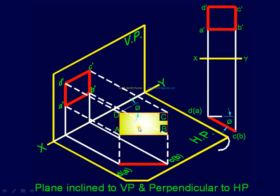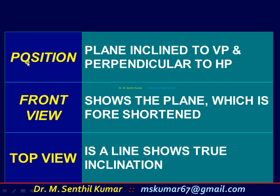The other possibility: plane inclined to VP and perpendicular to HP. Here, the front view is a foreshortened rectangle and the top view is a line that shows the true angle. Plane inclined to VP and perpendicular to HP: front view shows the plane which is foreshortened; top view is a line that shows the true inclination φ.